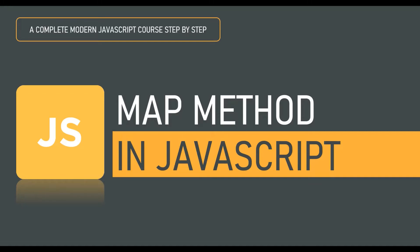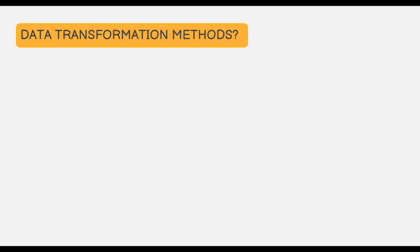In JavaScript, we have three important methods that we use all the time to perform data transformation. These are the methods which we use to create new arrays by transforming data from a given array. In recent years, these methods have become really popular and for good reasons. You will find them everywhere in modern JavaScript programs. The three data transformation methods are map, filter, and reduce.